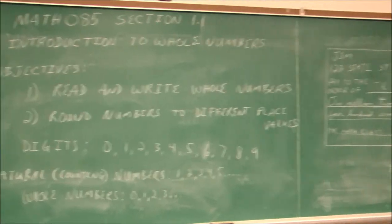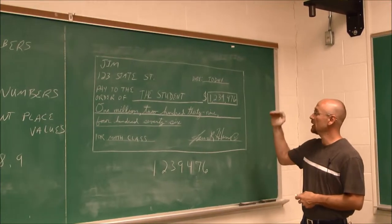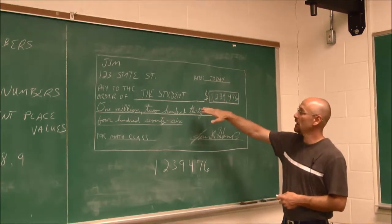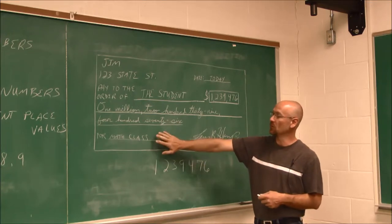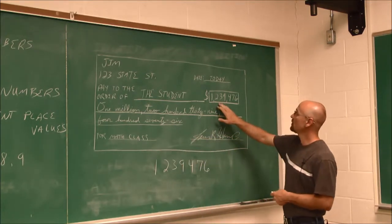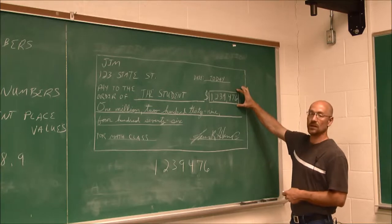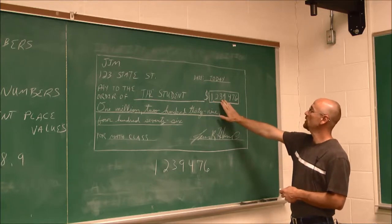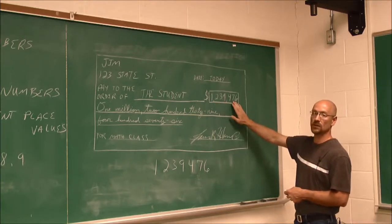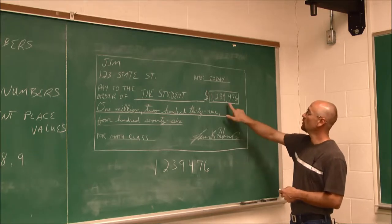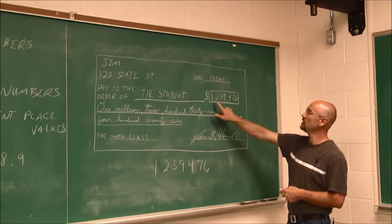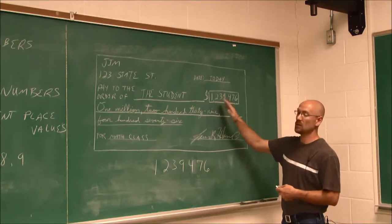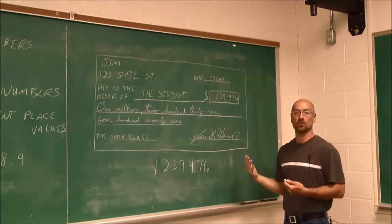The next thing we're going to look at is an application to reading and writing of values, and maybe we write a check. Here, I'm going to write a check to you, the student, and for the reason of math class. And we have this quantity here. This is a number in standard form, where we use the digits to show the number. We have 1,239,476, and we notice that our standard form, we have these commas in here. Generally, for any number greater than 1,000, we use these commas as an accounting purpose.